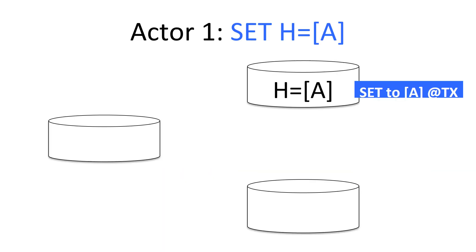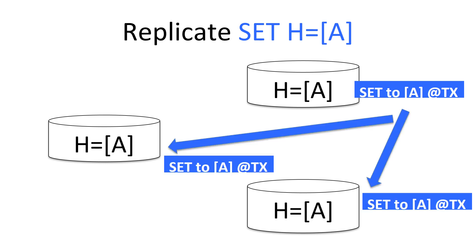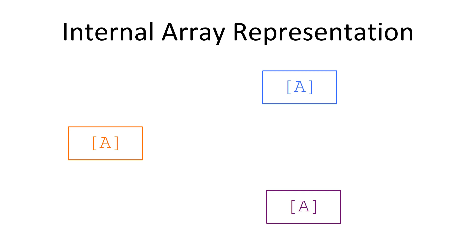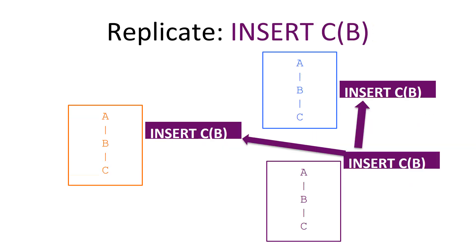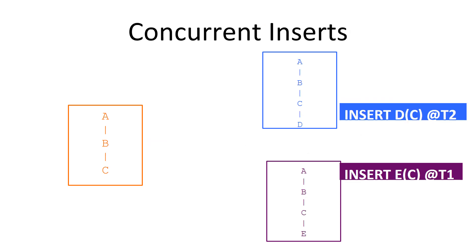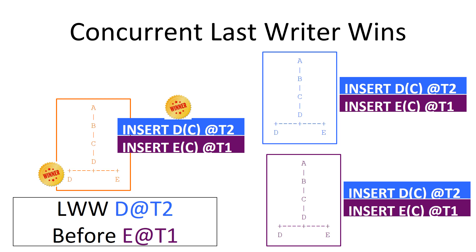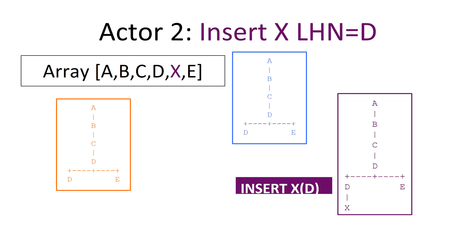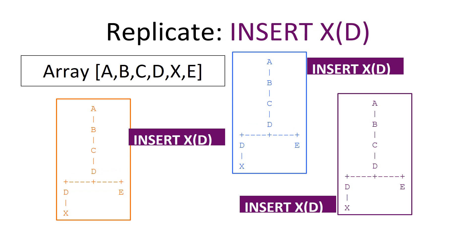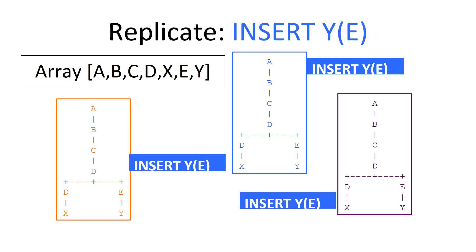Here's a concrete example: initialize with just a as the sole array element and replicate. Then b happens after a (replicated), c happens after b (replicated). Then concurrently, the blue guy says d happens after c, and the purple guy says e happens after c. D happened at T2, which is the last writer, so d becomes the left child — and in a depth-first traversal, that makes d first among the concurrent additions. The resulting array from depth-first traversal is a, b, c, d, e. To extend: if x happens after d, we get a, b, c, d, x, e; if y happens after e, we get a, b, c, d, x, e, y.